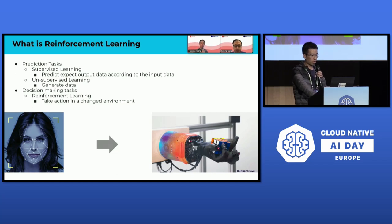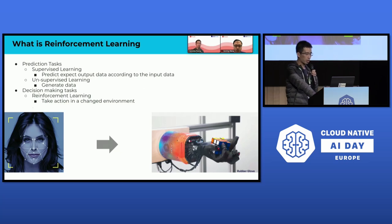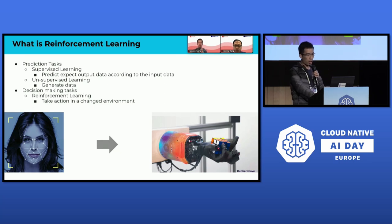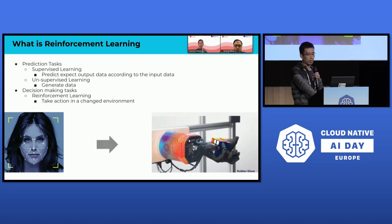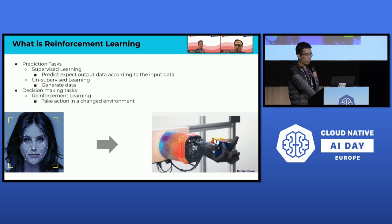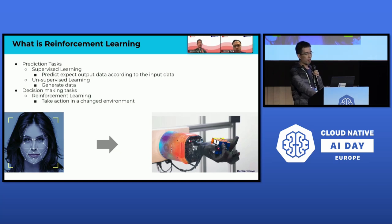While rule-based descheduling achieves outstanding results in these scenarios, addressing our specific problems effectively, we are curious about potentially more efficient methods. With the rise of AI, we are exploring whether machine learning technologies can enhance scheduling efficiency. Reinforcement learning in particular has seen widespread application in scheduling research in recent years. Scheduling problems can be categorized by machine learning objectives into two main groups: prediction tasks and decision-making tasks. Decision-making tasks involve training an agent to autonomously make decisions to achieve a goal, such as playing games, which is where reinforcement learning excels.